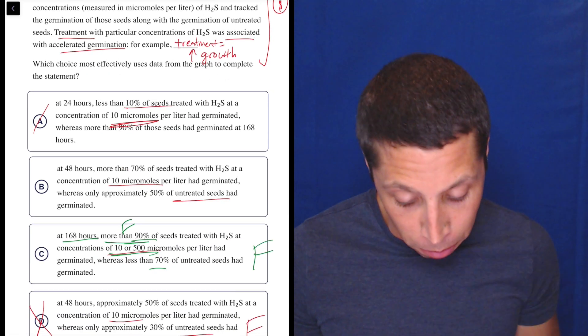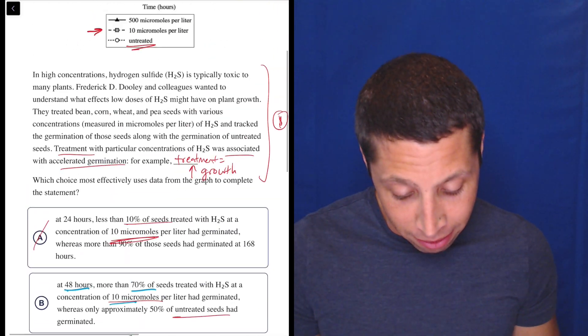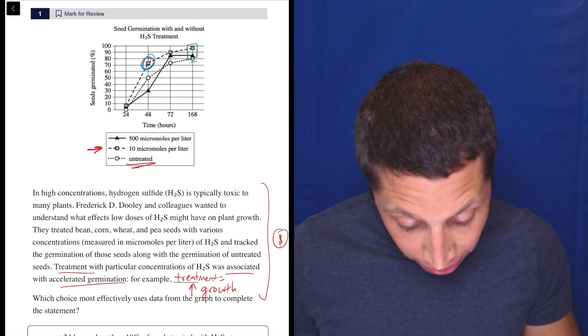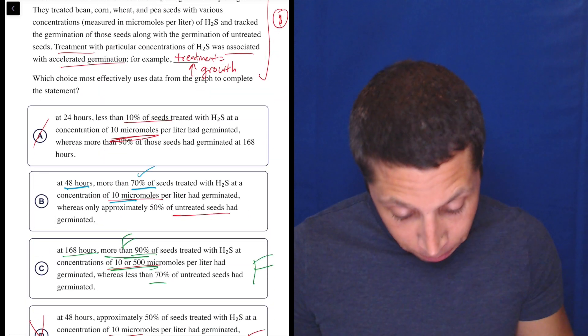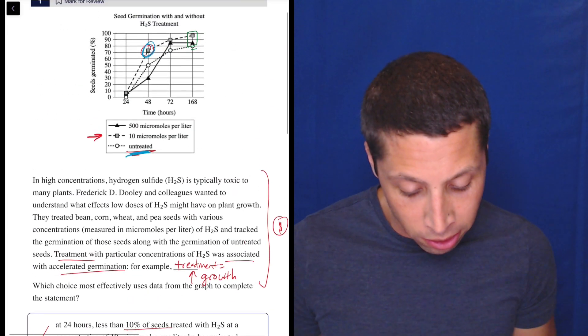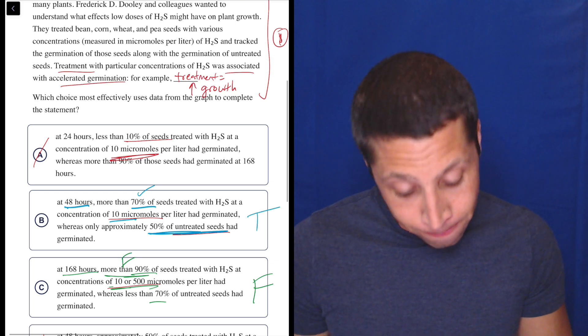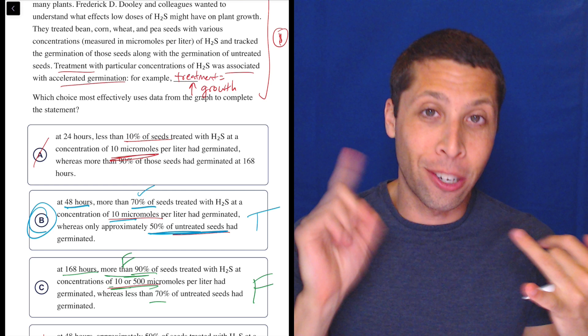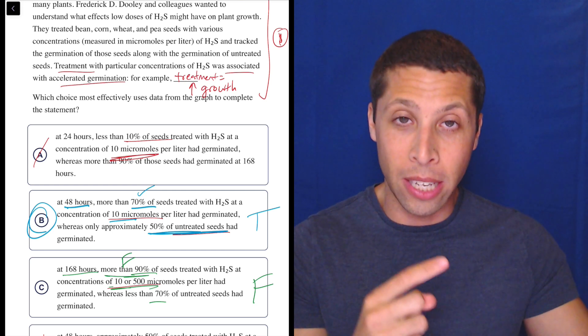So let's double check with B. Let's switch to blue. So at 48 hours, 70% of the 10. So 48 hours, 10 is the square. So it's back to here. And yeah, that looks like more than 70. So, okay, that seems good. Check. Whereas only approximately 50% of the untreated seeds. So untreated is the circle. So 50% of the untreated seeds. So that seems true. There you go. It does two things, right? It reflects the data in the graph and it reflects the comparison that was necessary for the paragraph.